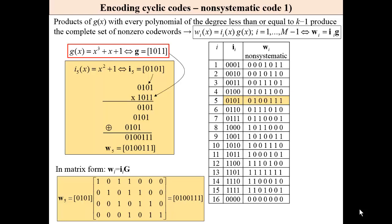Cyclic codes part 2: encoding and decoding strategies. For encoding a non-systematic code, you use the generator polynomial. The product of the generator polynomial with every polynomial of degree less than or equal to k minus 1 produces the complete set of nonzero codewords. This can be expressed by the formula where we simply multiply the information polynomial by the generator polynomial. For example, taking an information polynomial in binary form and multiplying it by the generator polynomial — where addition is modulo-2 — we obtain a code word.